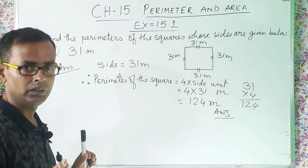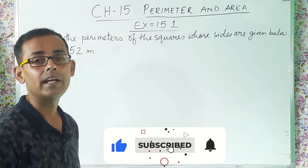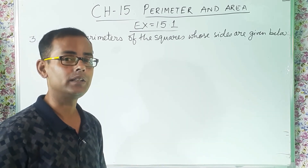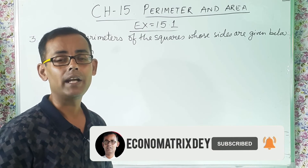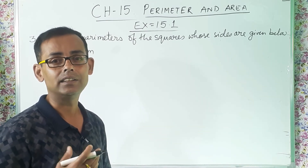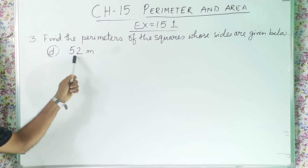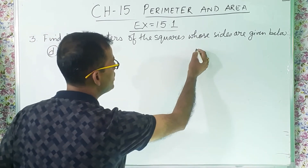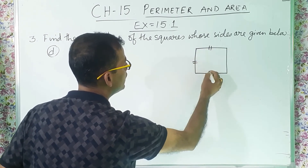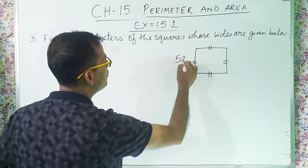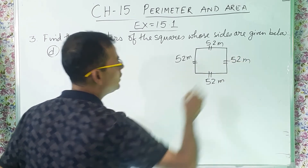If you like my channel, then please give a like, share it with your friends, and subscribe. Don't forget to press the all-notifications bell so that whenever I upload any new videos, you will get the notifications first. Now question number 3D: 52 meter. First I will draw the square — all sides are 52 meter, 52 meter, 52 meter, 52 meter.